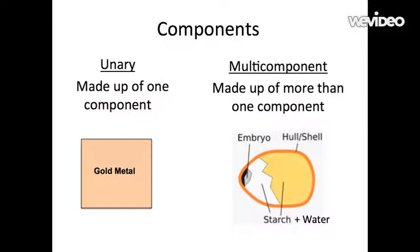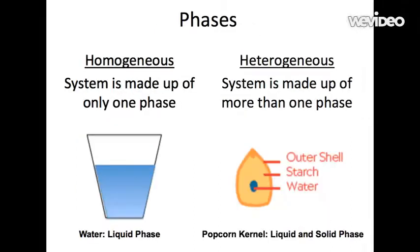The next category that we classify systems by is phases. This is asking us to specify what phase our system is in. Since we have two different phases present in our system, liquid and solid, our system is classified as heterogeneous.